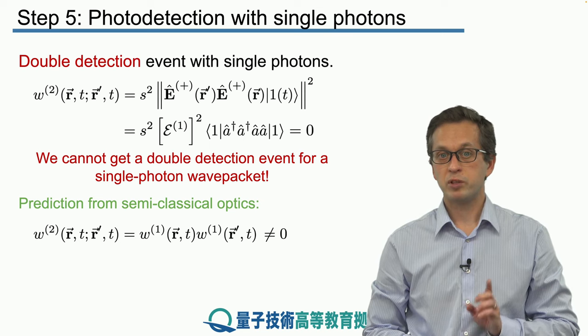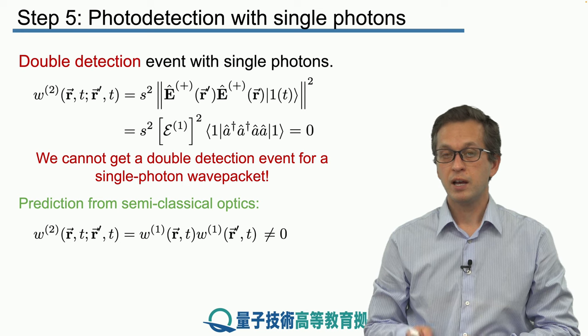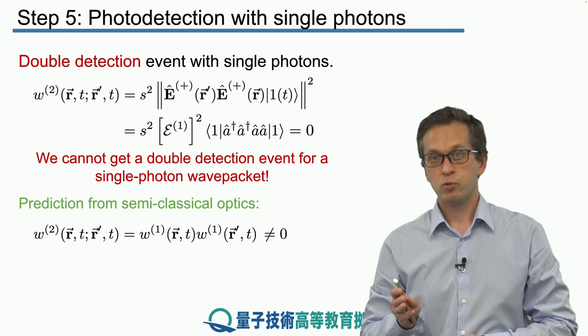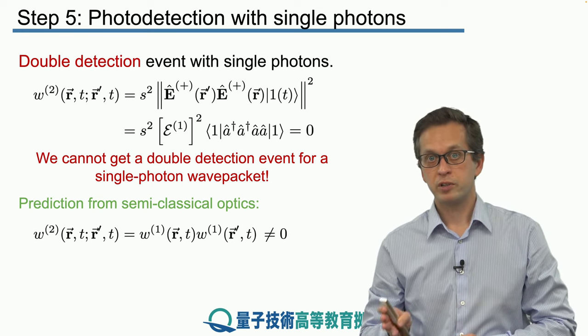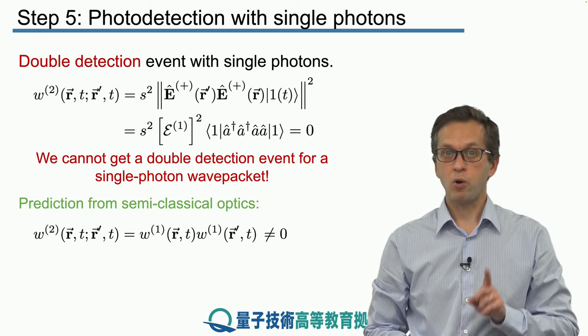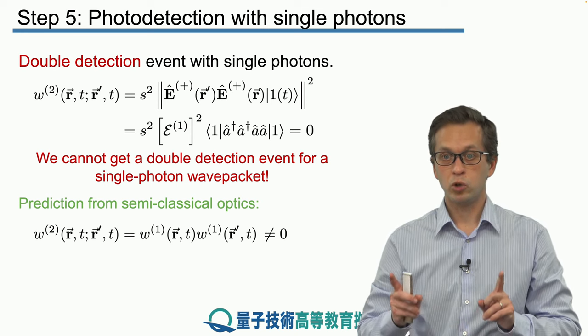There was a clear distinction between the predictions of the semi-classical model and the quantum model. And what was observed in the labs was the predictions of the quantum model. So always one detector clicked, not both of them.